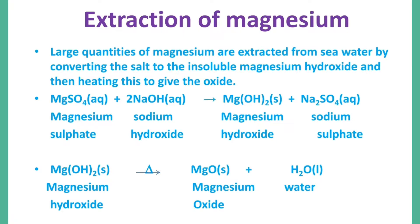Extraction of Magnesium. Extraction of Magnesium Hydroxide. CO2 is over 25%. It can be used with NY sulfate.